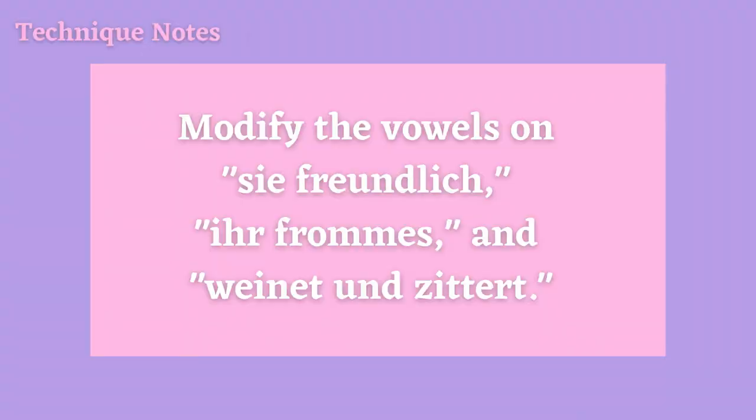Technique note number four: when you get to the phrases that include the words sie freundlich, ihr frommes, and weinet und zittert, those are all set on the highest pitches of the song. You will need to modify the vowels on those words, using taller vowels as you sing up into those higher pitches — as in the phrase und ihm entschleiert sie freundlich, ihr frommes Blumengesicht. Make sure you feel comfortable modifying those vowels nice and tall, and don't sing those high pitches with a closed-off mouth.